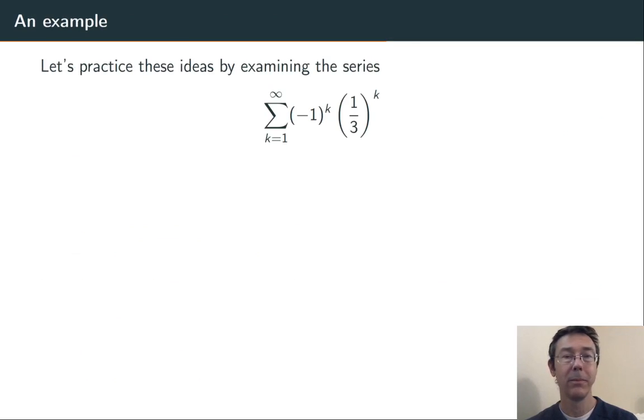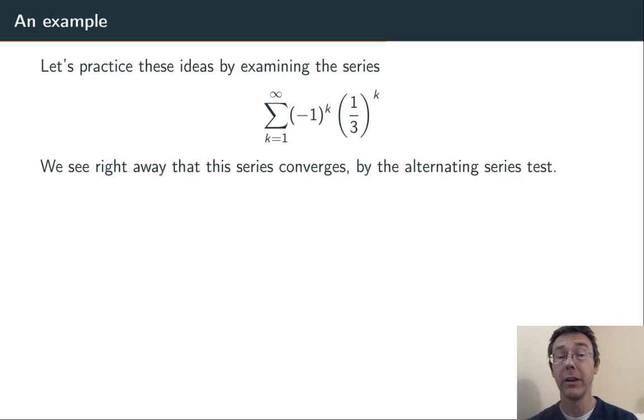Let's have an example. Sum, k equals 1 to infinity, (-1)^k times (1/3)^k. This is a convergent series, by the alternating series test.